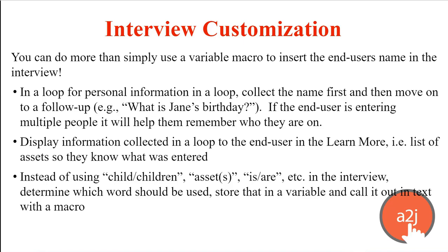And instead of using a slash like 'child/children' or 'asset(s)' or 'is/are' because you're not sure what the proper word is, you can use the information the end user has given you — like how many children they have — to set a new variable called 'child or children TE' to the correct word, either 'child' or 'children', and then use that in a macro in a follow-up question. Same thing goes for 'asset' or 'assets', and 'is' or 'are'. You can use the proper word in place of the slash by using a variable macro.